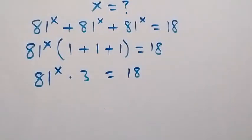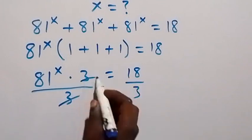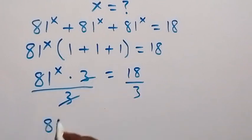In the next step, we divide both sides by 3. The 3 cancels out, remaining 81 raised to power x equals 18 over 3, which is 6.